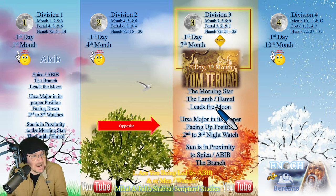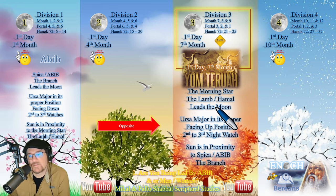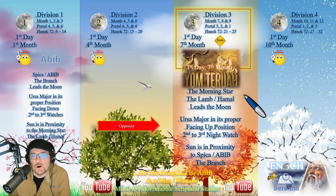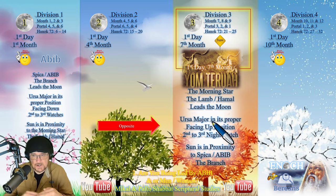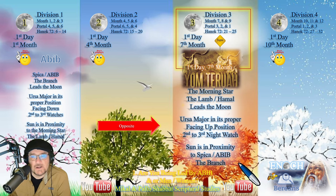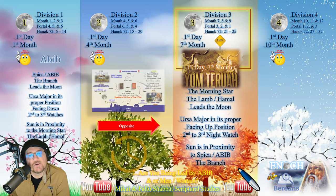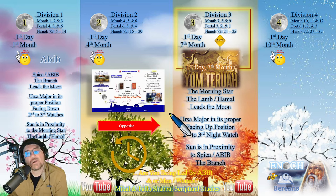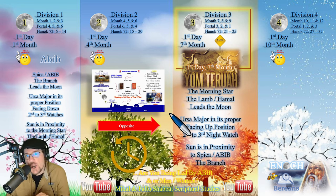Six months later that sign switches. On the first day of the seventh month, it's opposite — the morning star Hamal Aries is now leading the moon, Ursa Major is in its upper position facing up, ready to accept the fall produce during the second to third night watch, and the sun is in proximity to Spica, known as the branch. This is the seasonal, hourly, and navigational clock that Yahuwah has placed in the heavens that no one can manipulate.